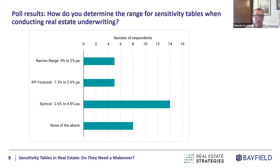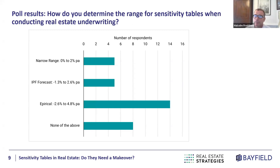There were two other choices in the poll. One was a forward-looking approach using the IPF consensus forecast — I do like the idea of having a forward-looking component to calibrating your sensitivity table. The other was a narrow range, and that's often my issue: you get an average forecast for growth of say two percent, then plus one and plus three — a very narrow range that doesn't actually cover the full range of potential returns.